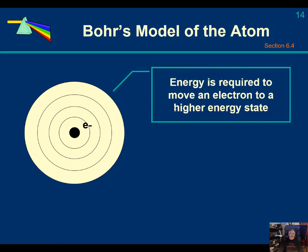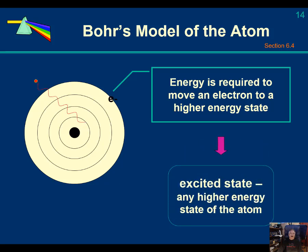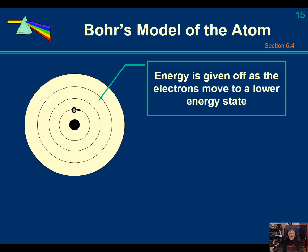If we have an electron at a lower energy level, energy is required to move it to a higher energy state. It winks out of the lower level and appears in the higher excited state. When an electron falls from a higher energy state to a lower energy state, it releases a photon of a characteristic wavelength. The amount of energy absorbed moving from a lower to a higher state is the same as the energy released when moving from that higher state back to the same lower state.